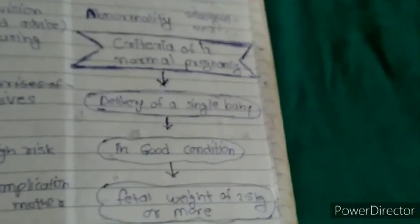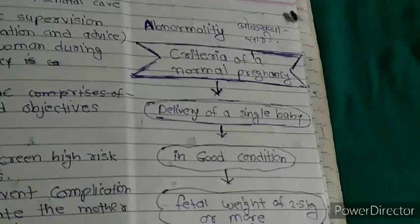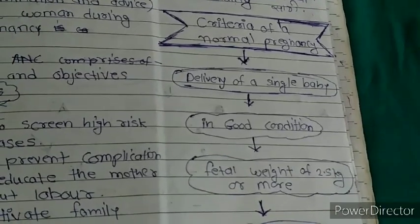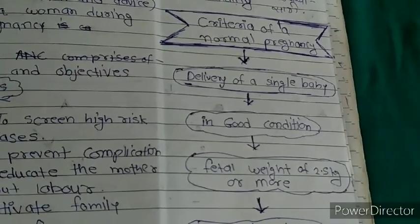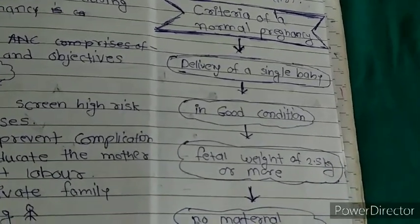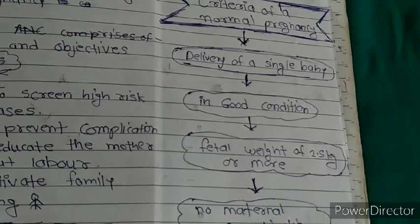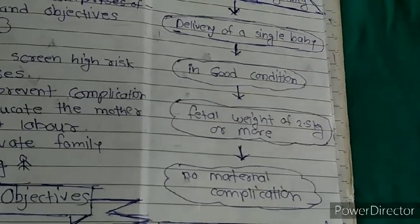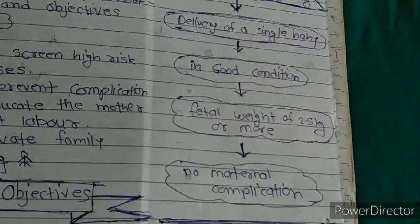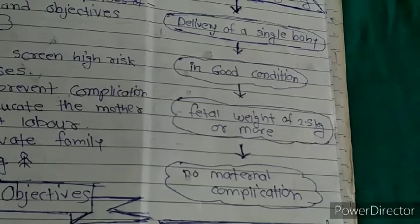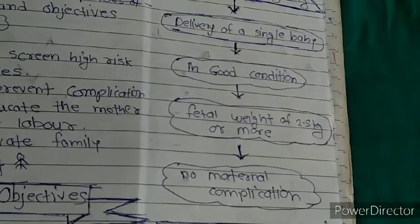The criteria of normal pregnancy: the first criteria is delivery of a single baby in a good condition. Fetal weight of 2.5 kg or more. No maternal complication — no preeclampsia or eclampsia.